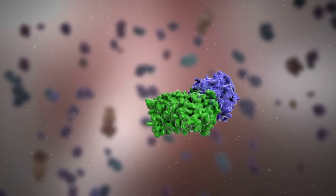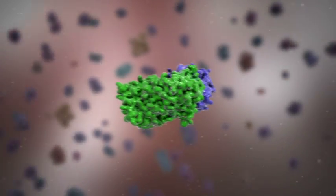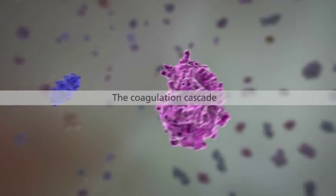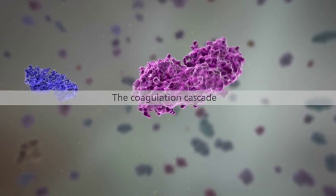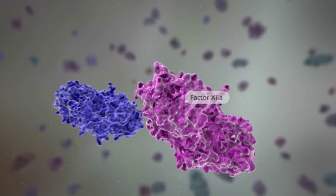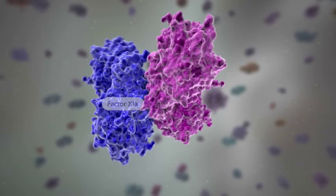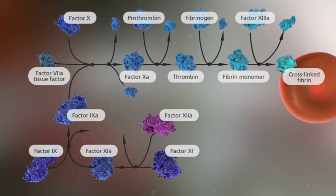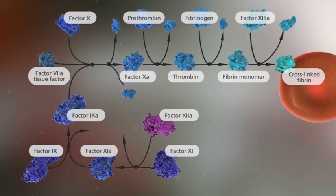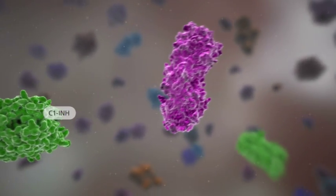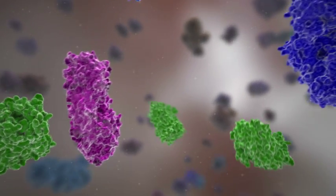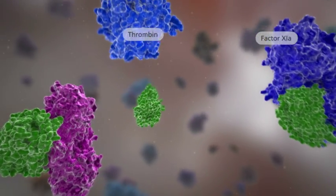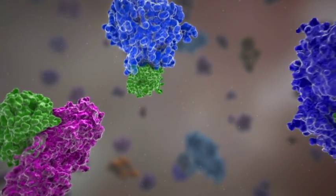The coagulation cascade is initiated by activated factor XII, which activates factor XI and ultimately results in hemostasis. C1 inhibitor inhibits activated factors XII and XI, and also thrombin, affecting the coagulation cascade.